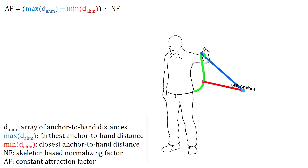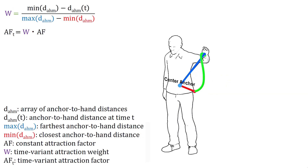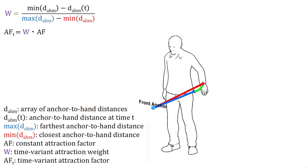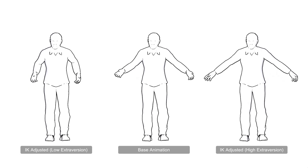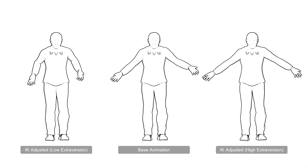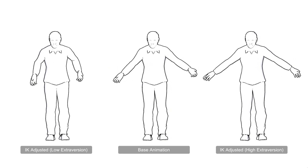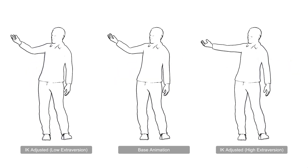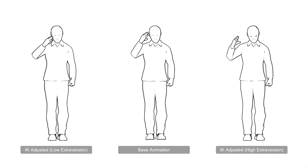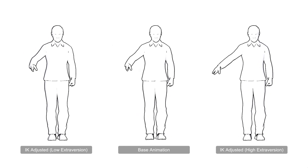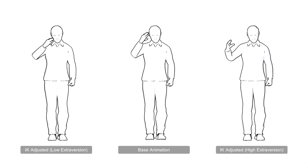Large-scale hand motions require the attraction factor to be updated dynamically. In those cases, we use time-variant attraction weights to preserve the essence of the base animation. The time-variant attraction weight is calculated based on the current distance of the hand to the corresponding anchor point, mapped into the zero-to-one range and multiplied by the constant attraction factor.